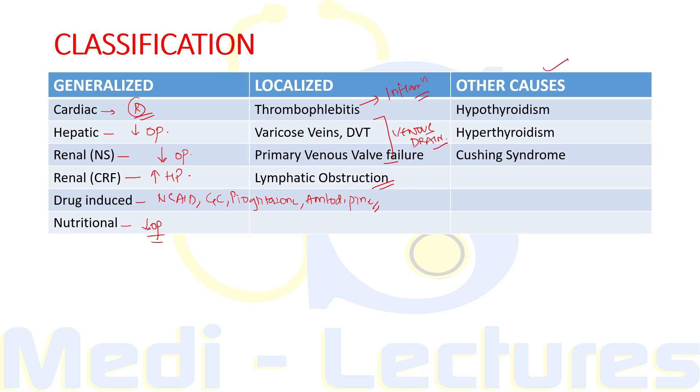Some other endocrine causes include hypothyroidism, hyperthyroidism, and Cushing syndrome, especially iatrogenic Cushing due to excessive glucocorticoid use. It is important to note that both hypothyroidism and hyperthyroidism will lead to non-pitting edema. So these are the various causes of edema.